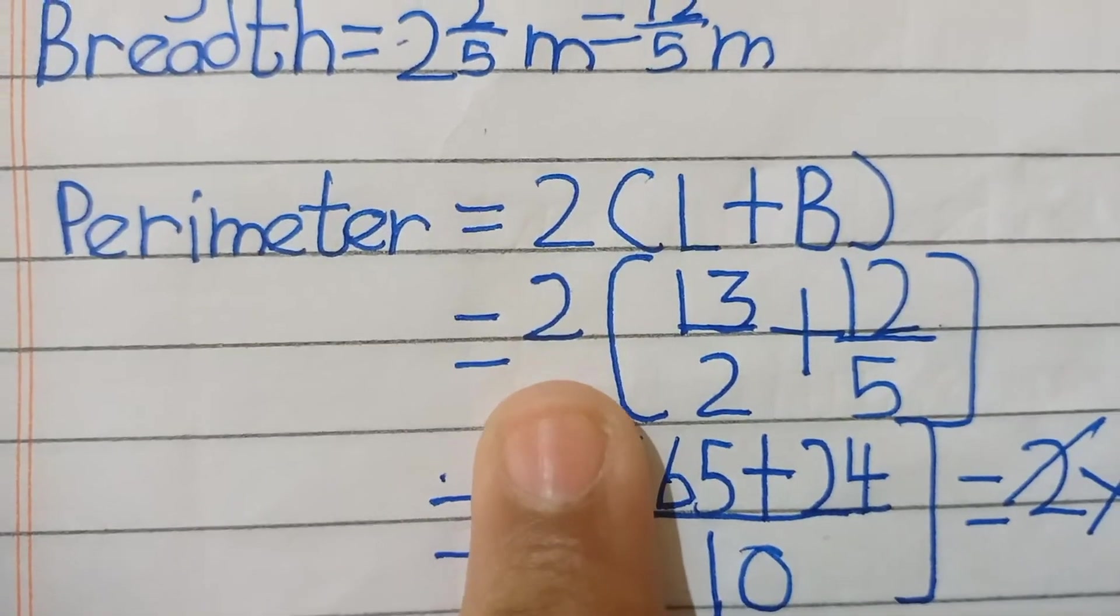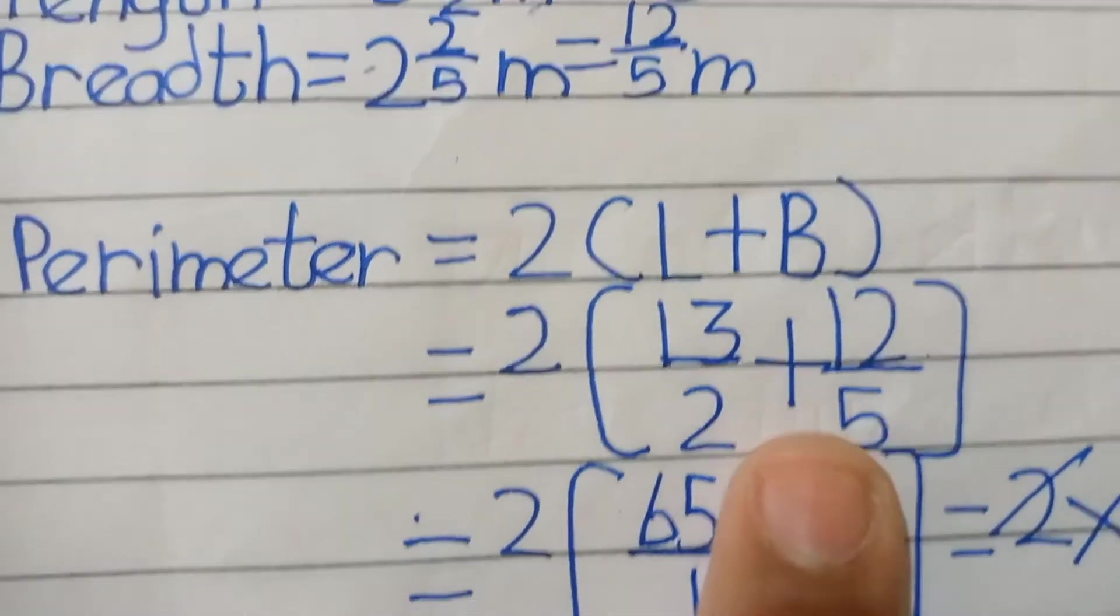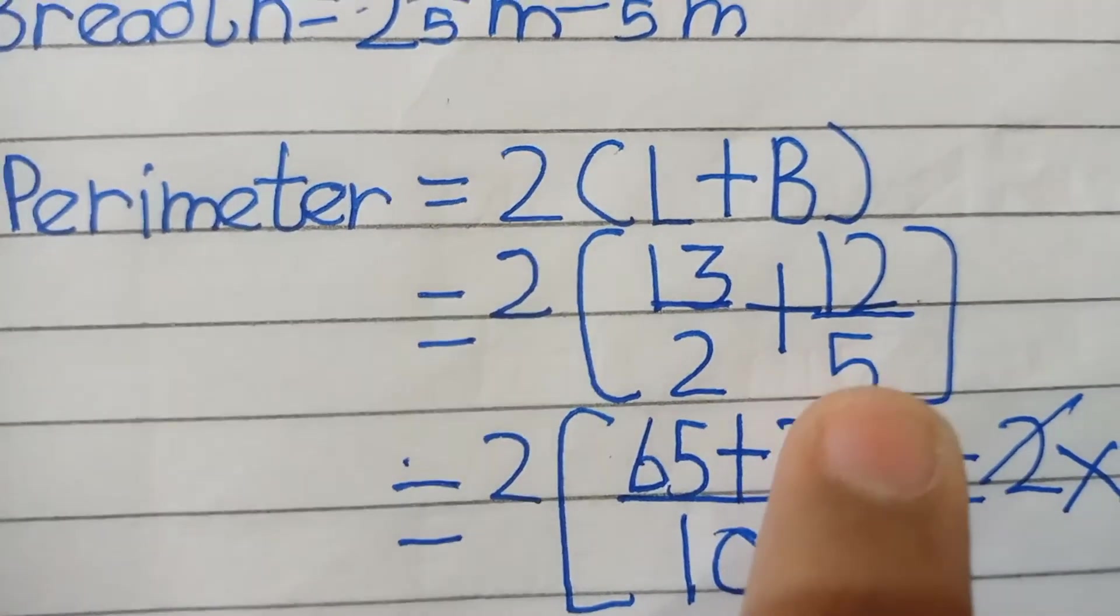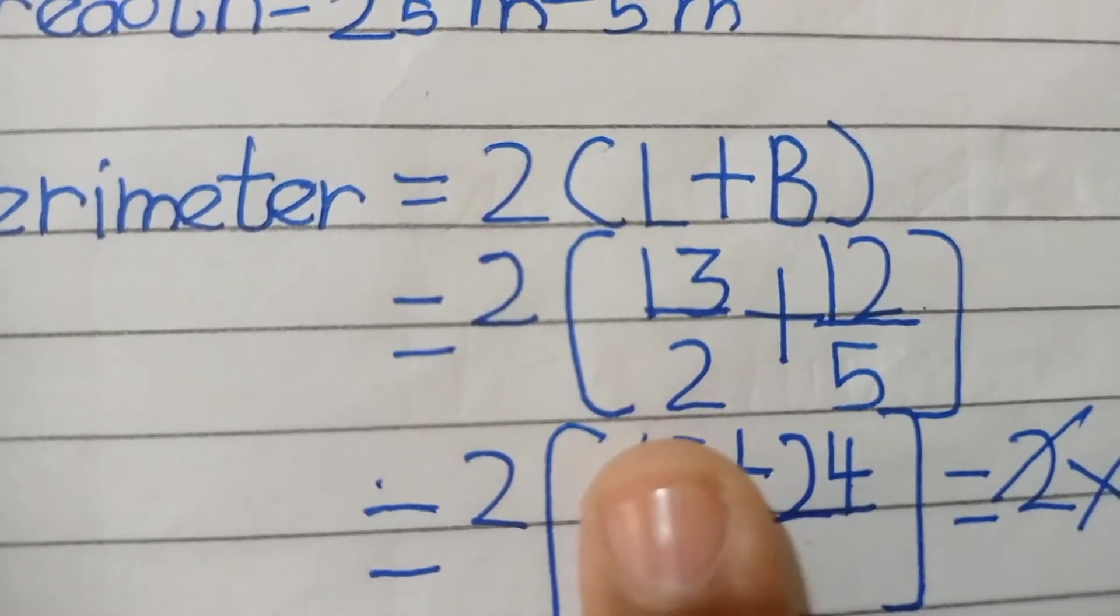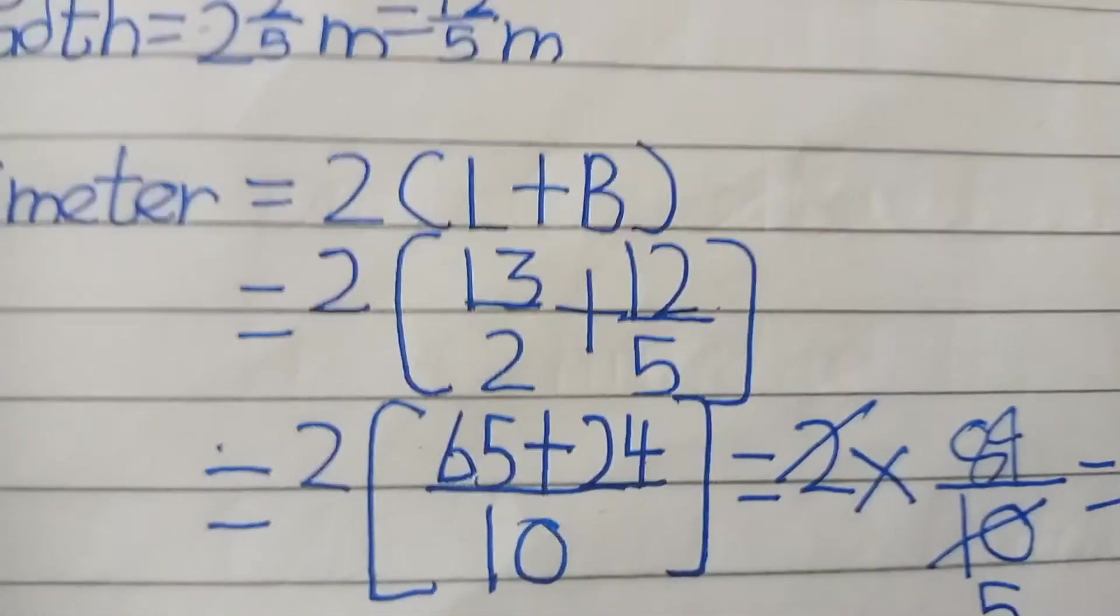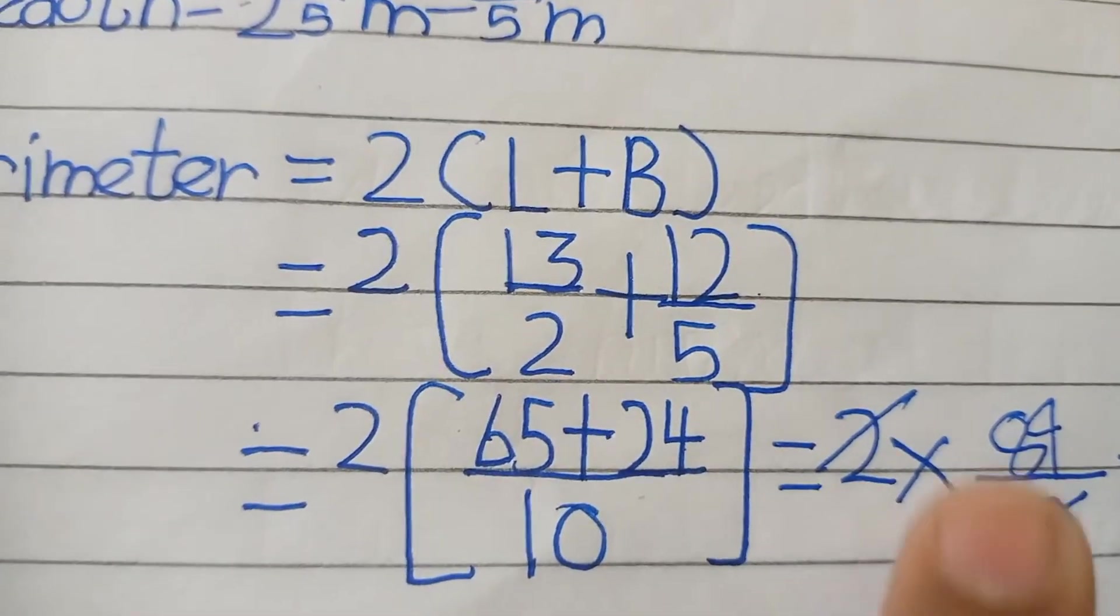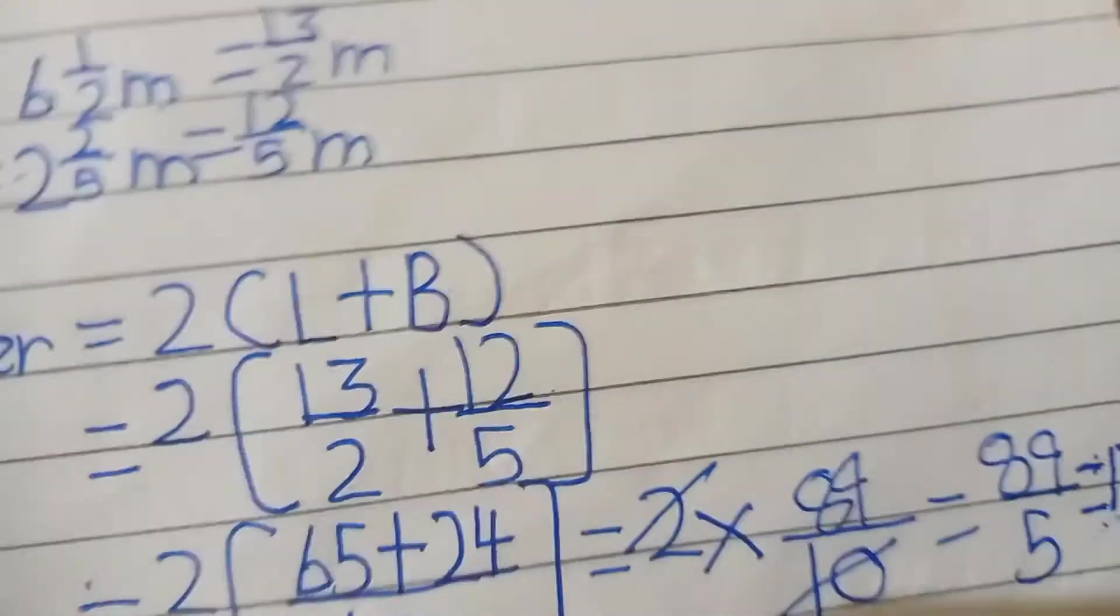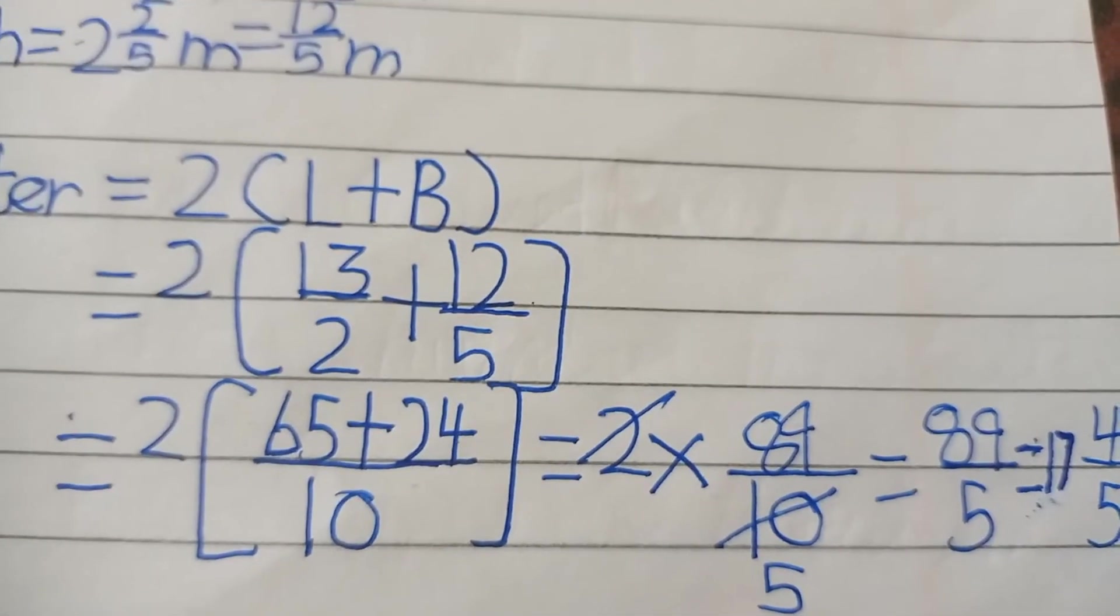So yeh jayega 2 into 13 over 2 plus 12 over 5. In dono ka LCM aayega jo ki denominator se unka LCM aayega 10. So upar walon ka bhi 10 ke saath hi change karna padega. 65 plus 24 jo ki ban jayega 89 over 10. So 2 into 89 over 10. 10 ko humne kat kar dena 2 ke saath, yahan par aayega 5. So 89 over 5 yani 17 whole 4 over 5. Yeh hai hamara perimeter.